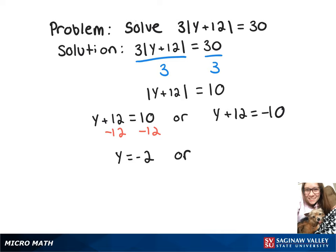Going back to the one on the right, we're going to subtract 12 from both sides. That's going to give us our other answer of y equals negative 22.